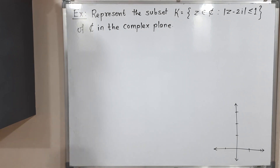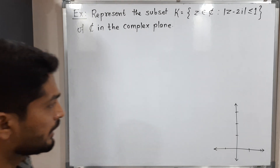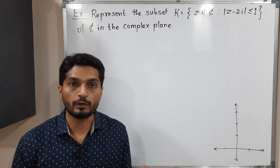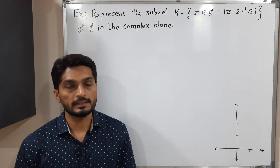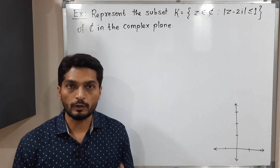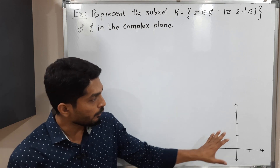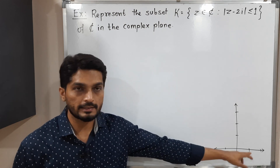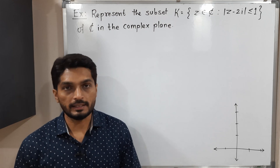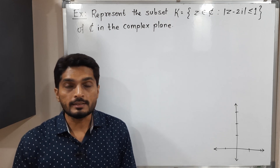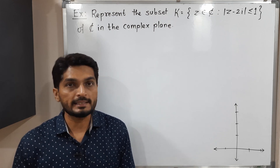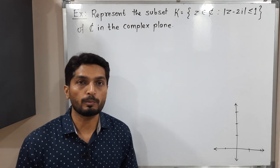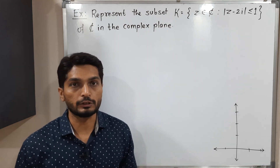Let us discuss this example. We have one set K which is a subset of the set of complex numbers, and we have to represent it in a complex plane. I have already drawn the complex plane here — this is the real axis X and this is the imaginary axis. K is a set of complex numbers which satisfy this condition, so we will start to solve this problem with that condition.